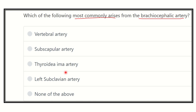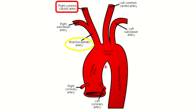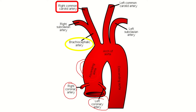The aorta is the largest and widest artery in the body. It arises from the left ventricle. From the ascending aorta, two important branches arise: the right coronary artery and the left coronary artery. The ascending aorta then continues as the arch of the aorta.